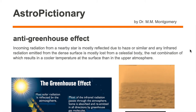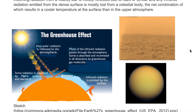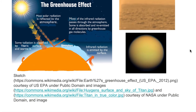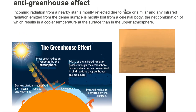This anti-greenhouse effect occurs on the moon Titan in our solar system. Here in the bottom right is a faraway view of Titan. Notice its orangish color. From the surface of Titan, we see this orangish color in the atmosphere, which is largely due to haze in the atmosphere of Titan.